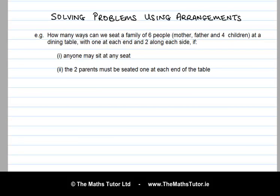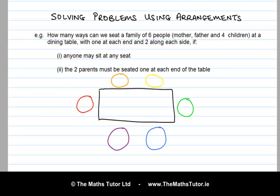Let's look at part one first, and let's draw a rough diagram of what's going on. We can give each seat a different colour to help us understand the situation. And we have a mother, father and four children, let's call them A, B, C and D. So those are six people in the family.